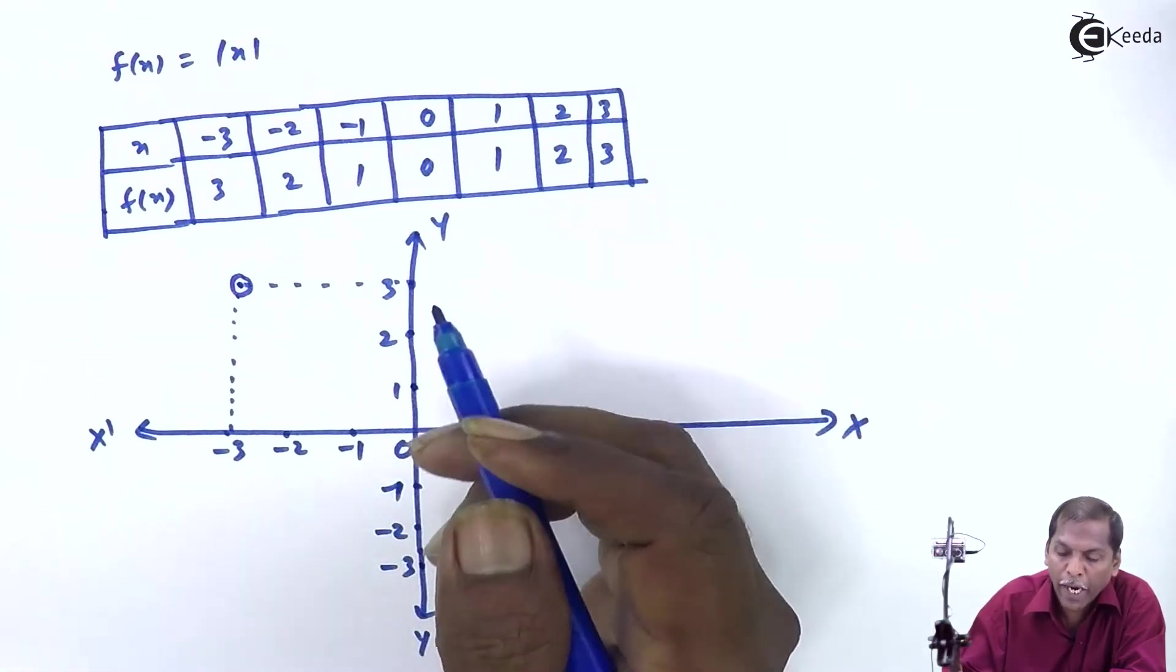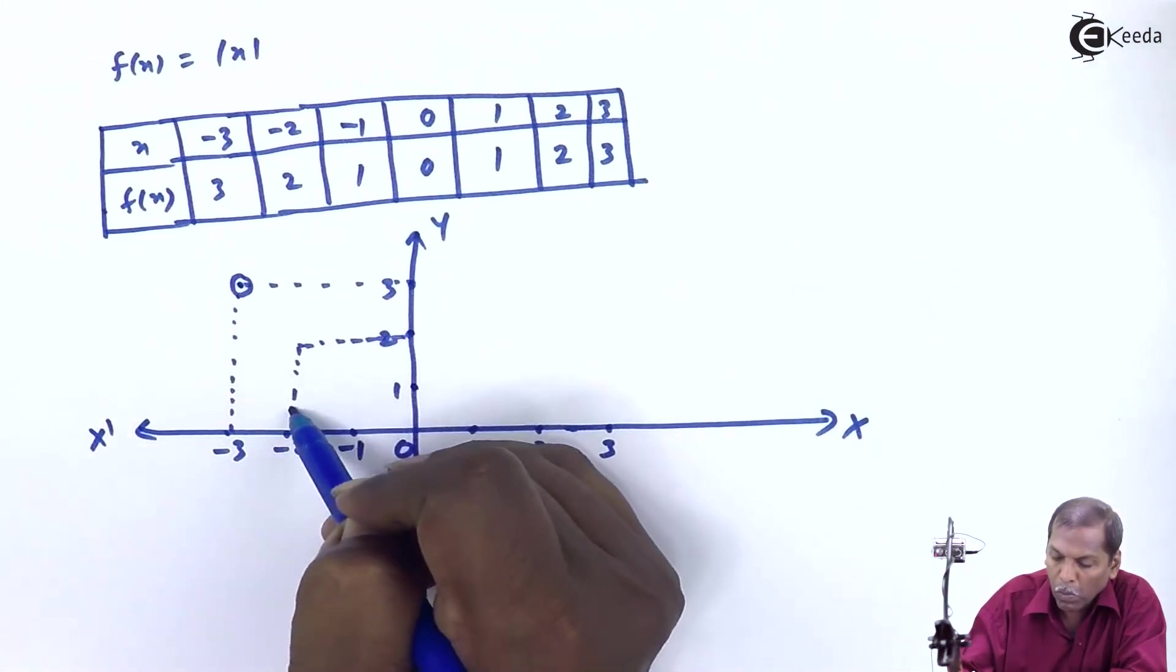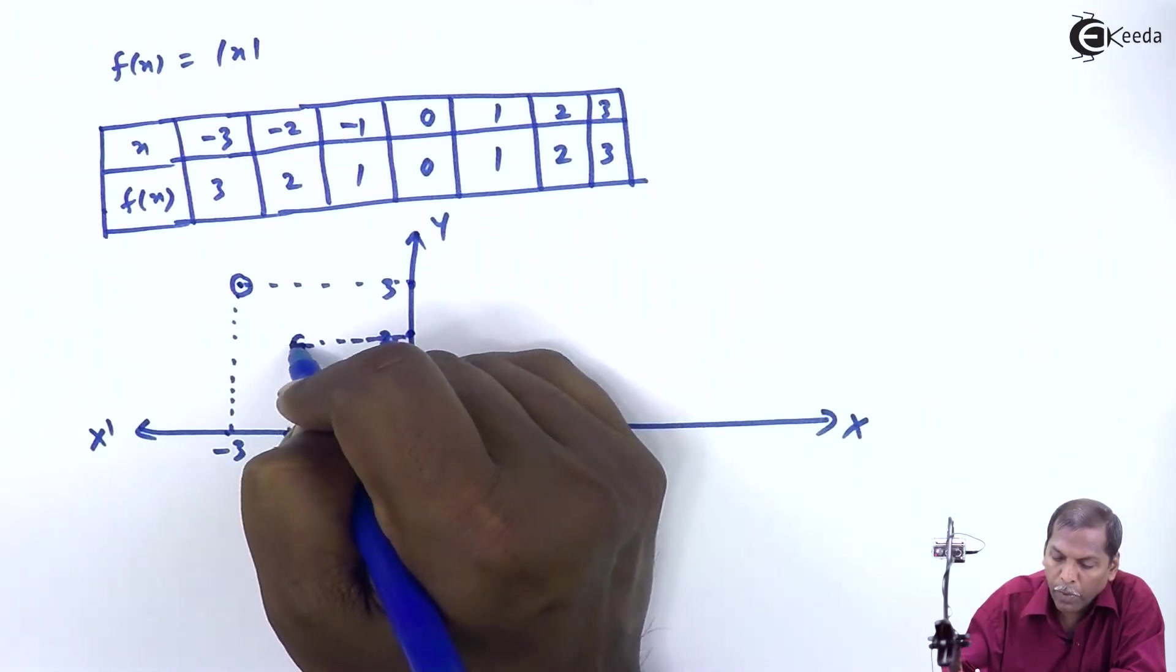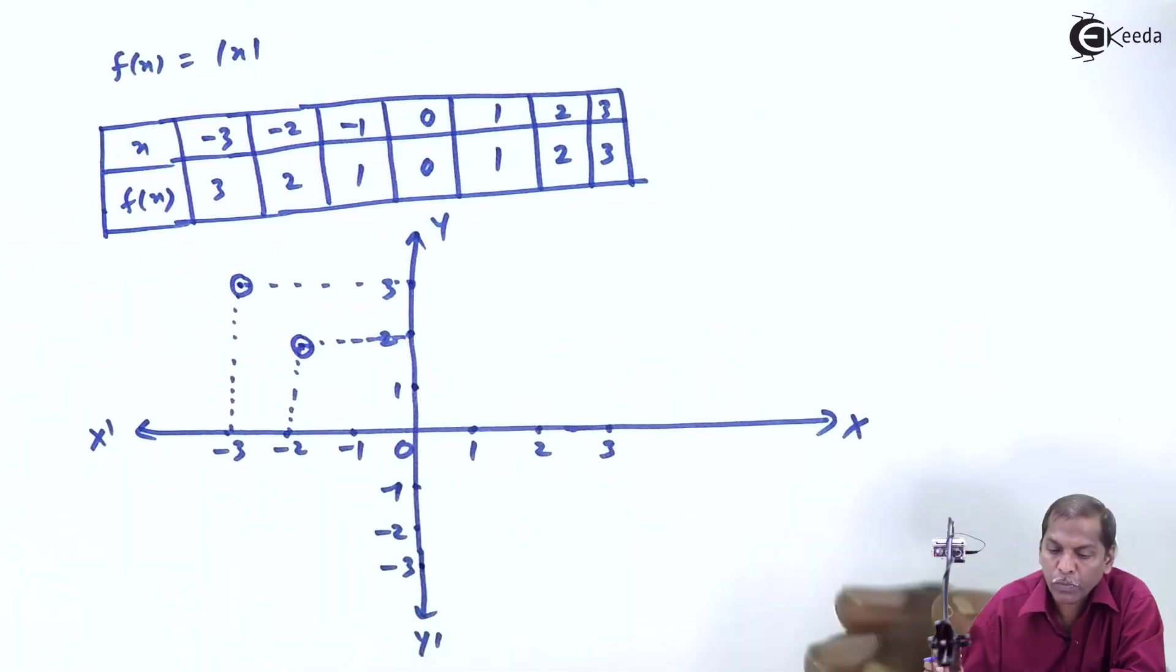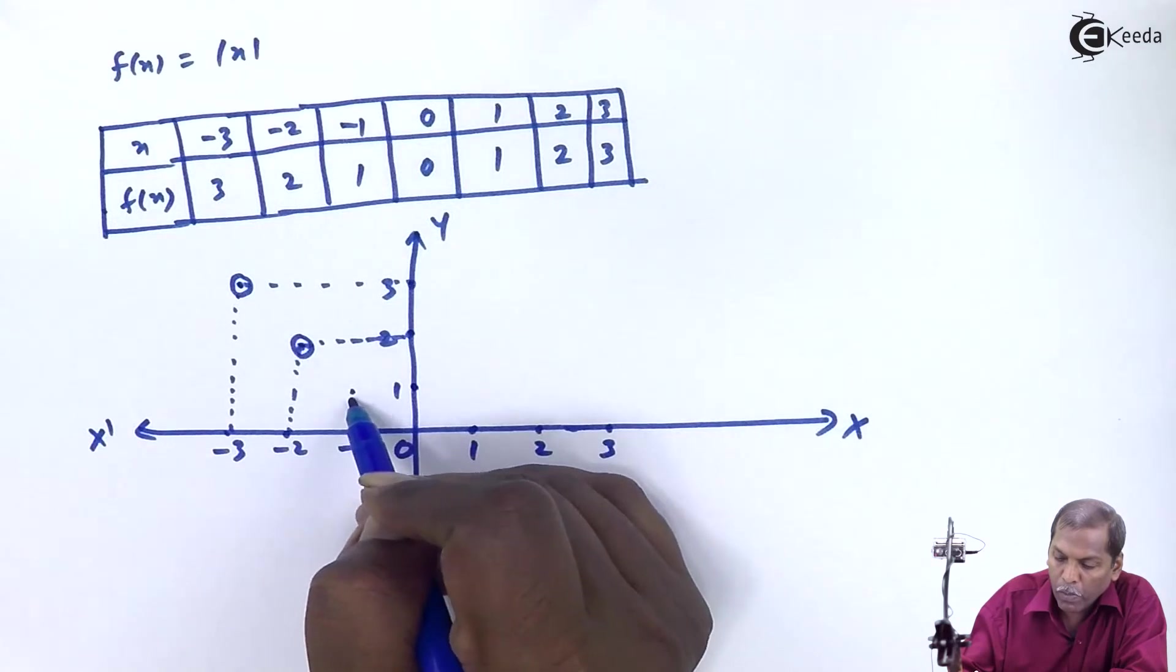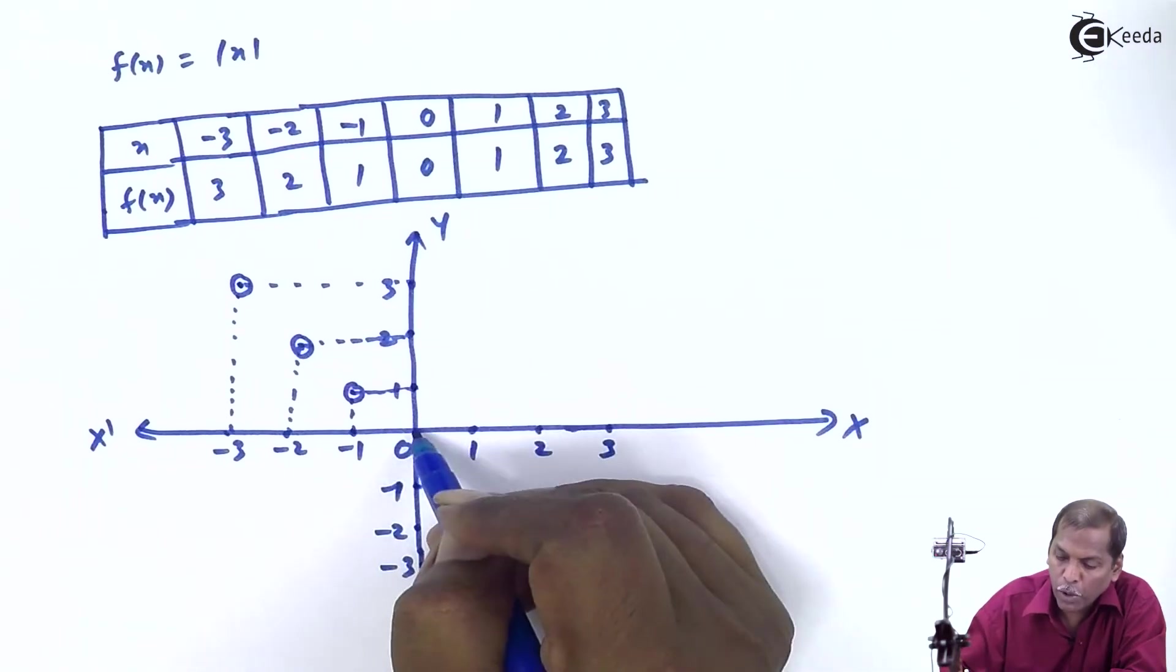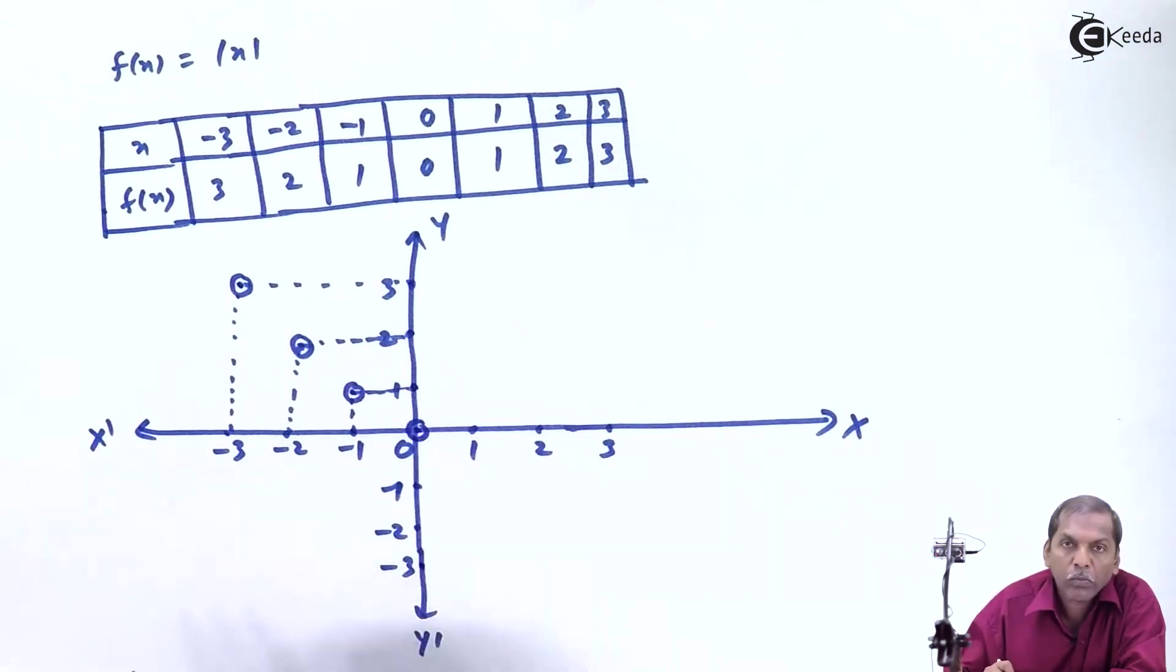Then we plot minus 2, plus 2. Possibly this is the point minus 2, plus 2. Then we plot the point minus 1, plus 1. Next value is 0, 0.